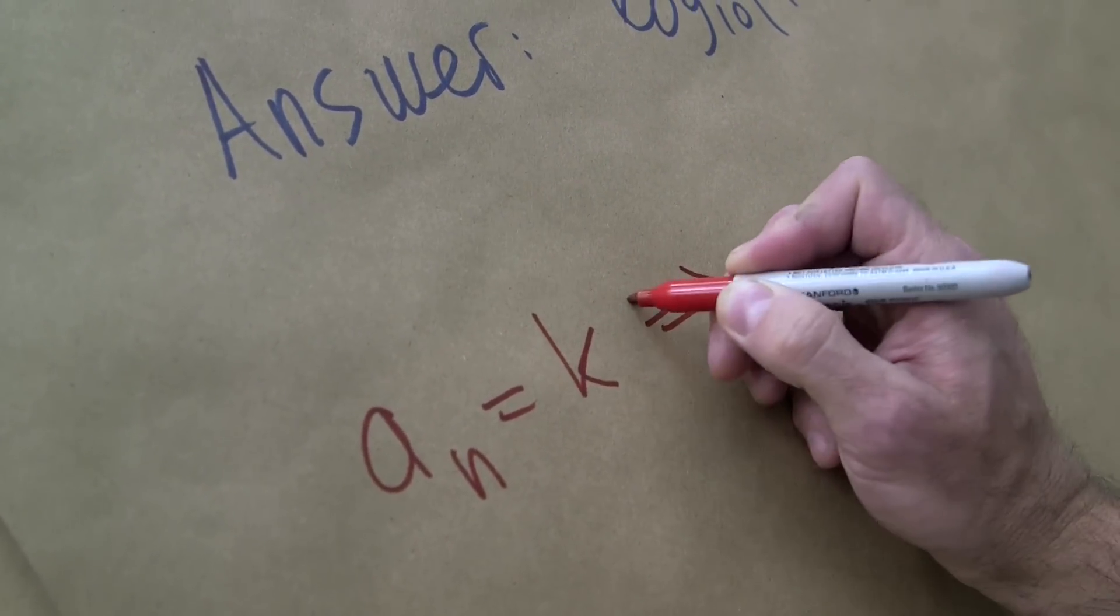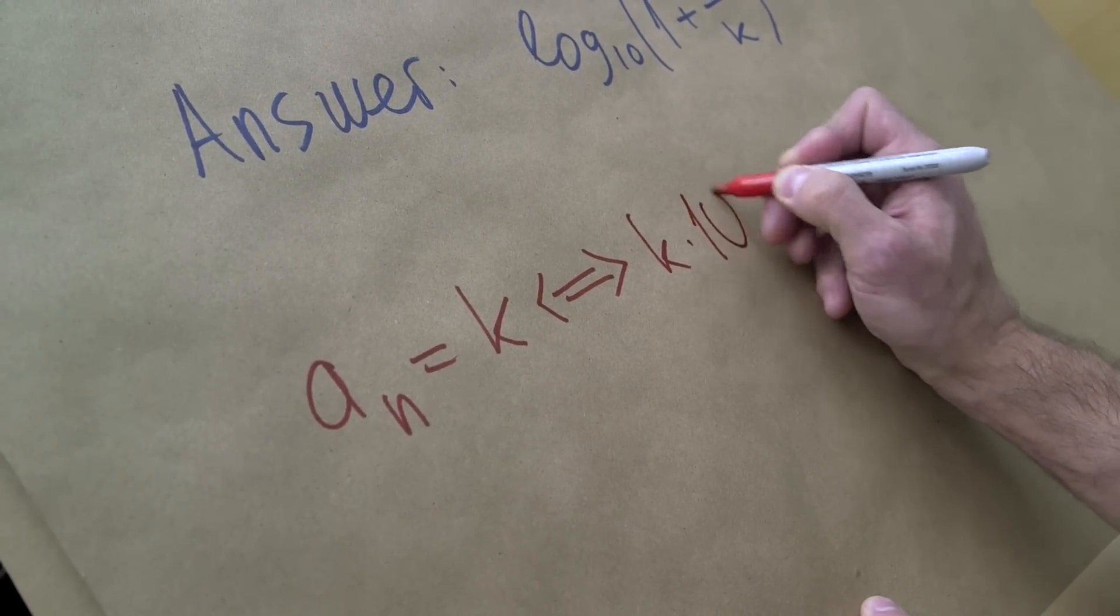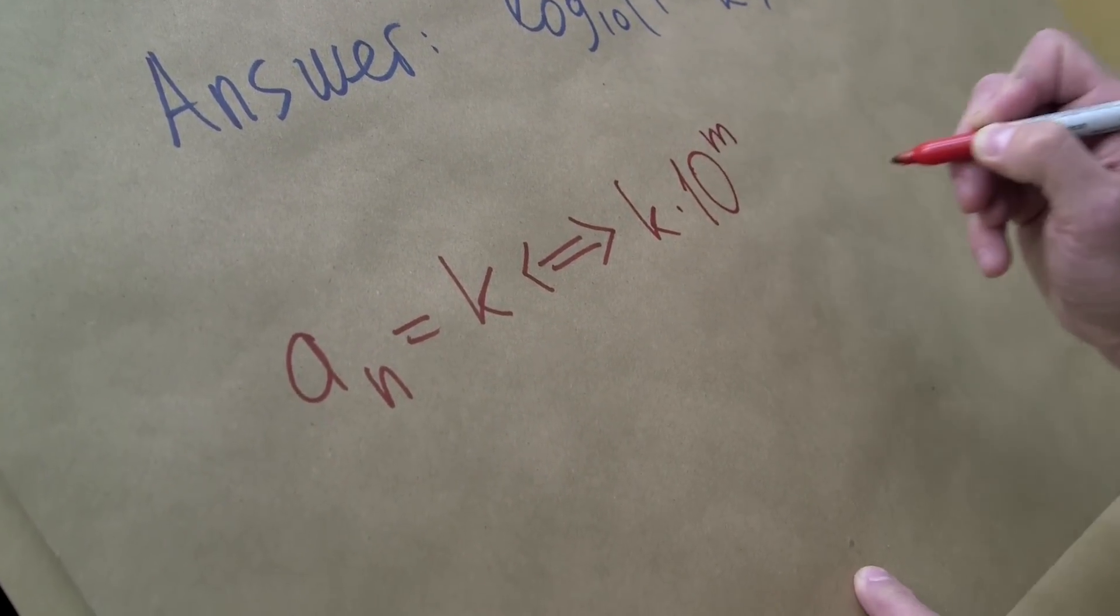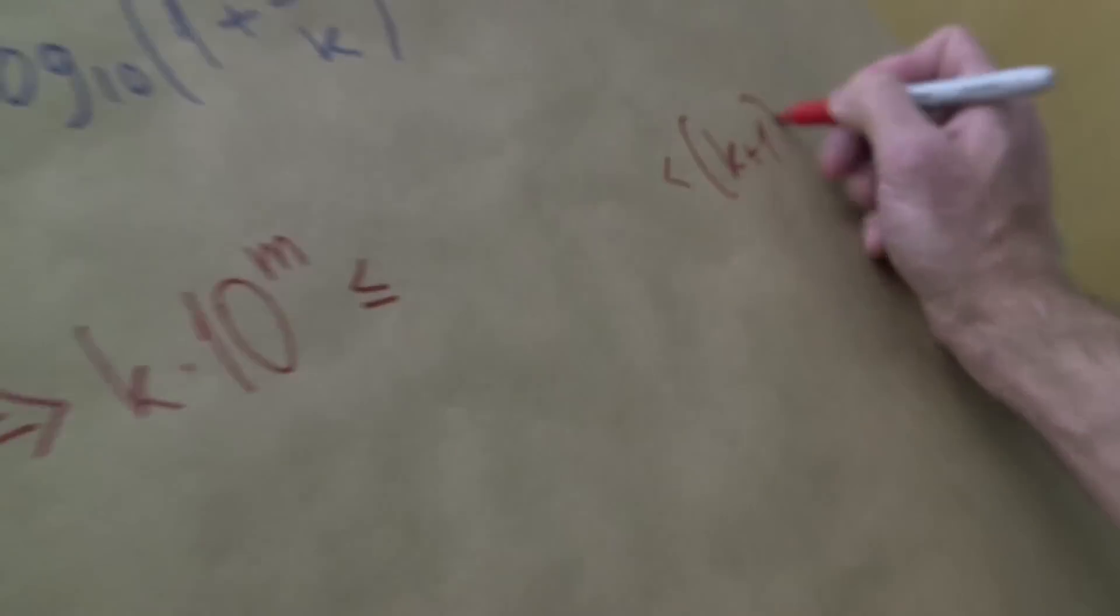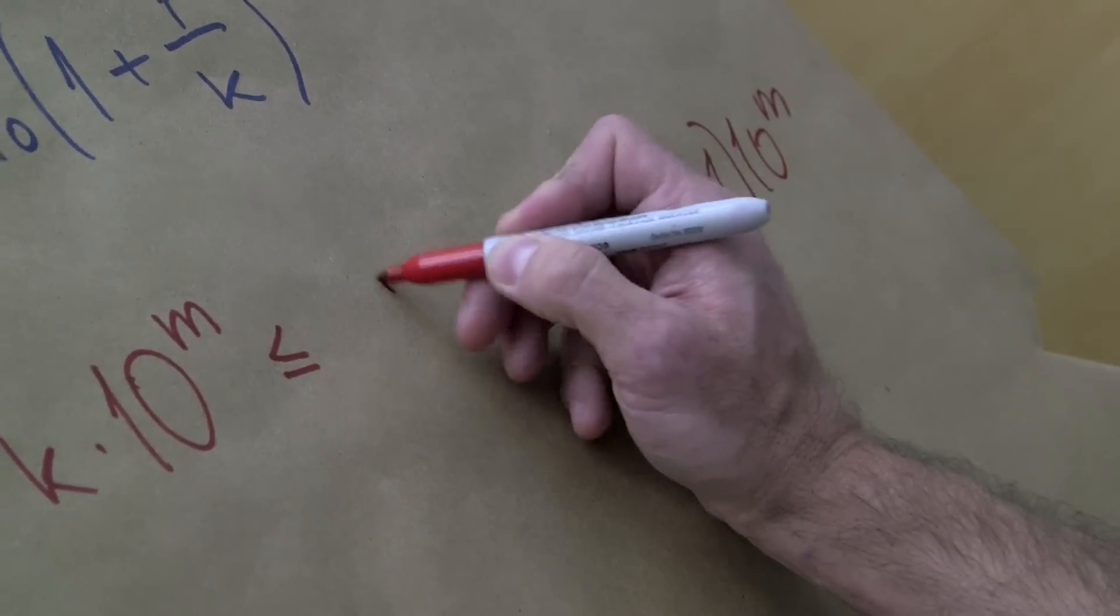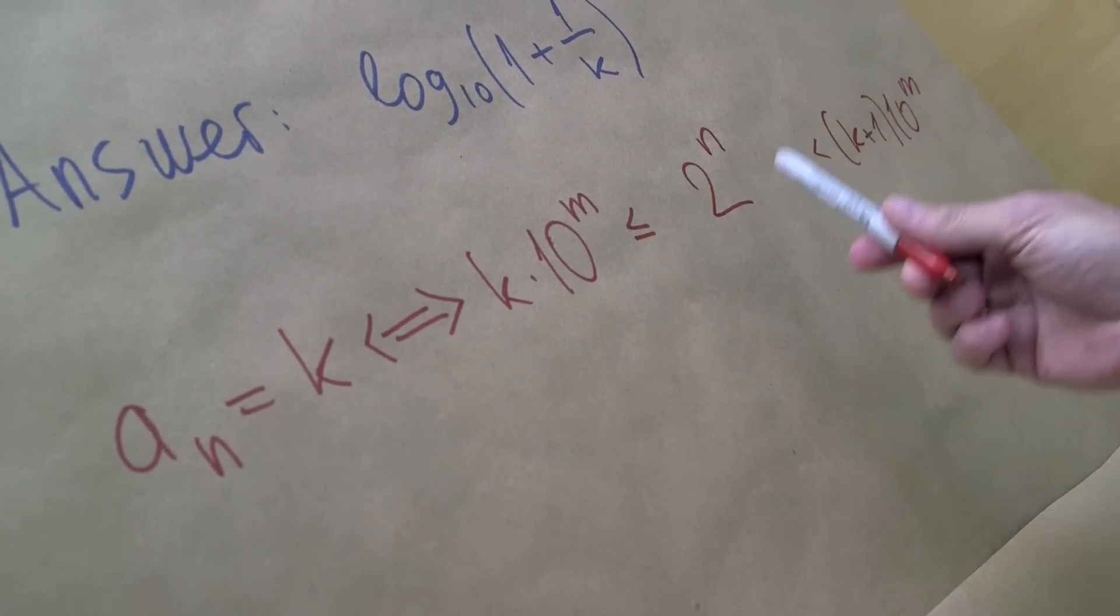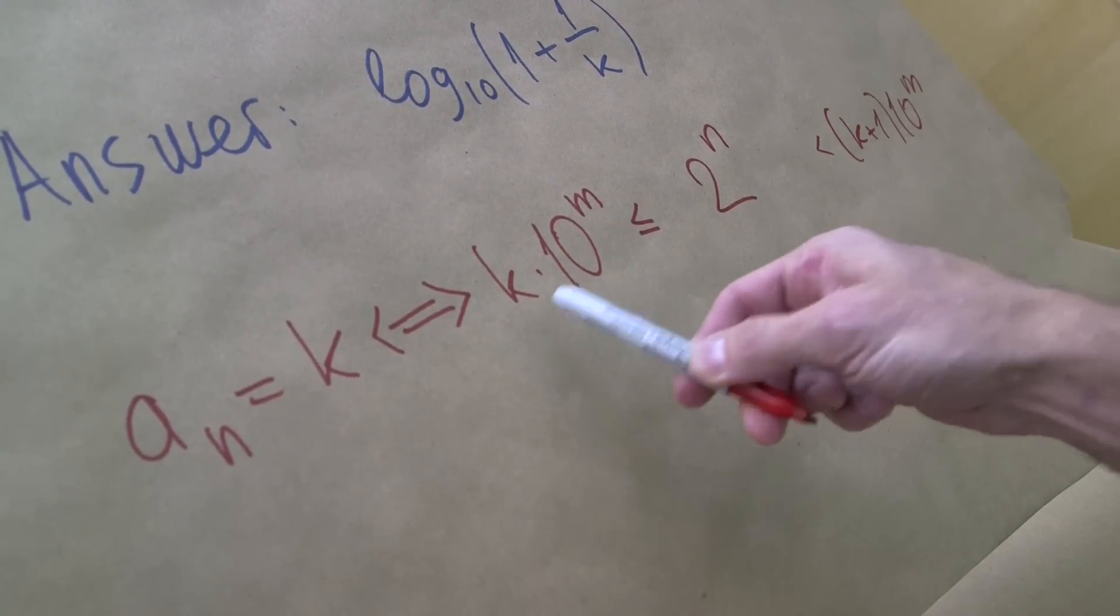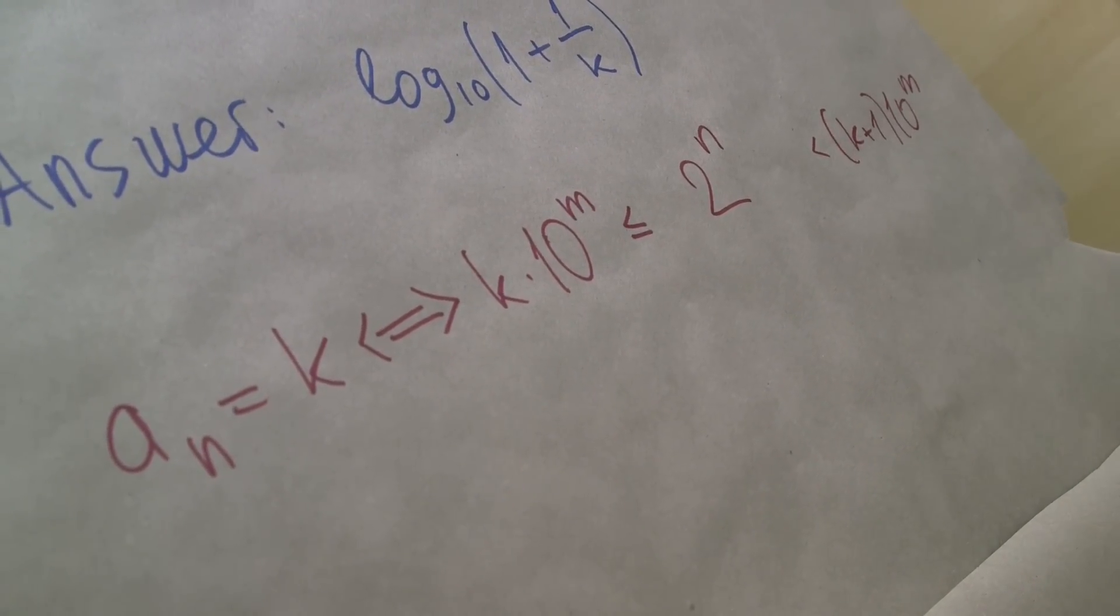If we think about it, this happens if and only if we have k times some big power of 10 on one side, k plus 1 times this power of 10, and here we have 2 to the n. So 2 to the n is between k times k with a bunch of zeros and k plus 1 with a bunch of zeros.